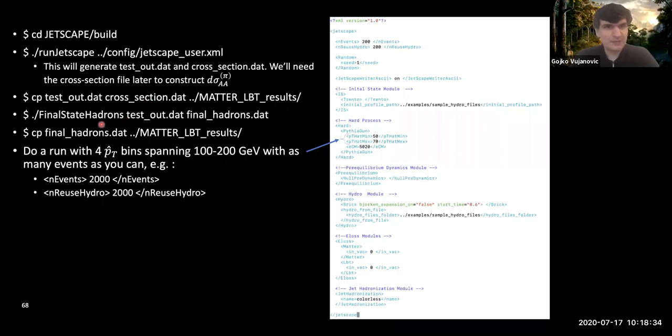After that, the idea is that we want to copy over these two output files inside of matter_lbt_results, in such a way that if you end up closing over the weekend the docker container, everything still exists on your home directory. Then run final_state_hadrons. We're still in the inside of the build directory, we're going to run final_state_hadrons on the test.out to output the final hadrons and then we're going to copy that over to matter_lbt_results.